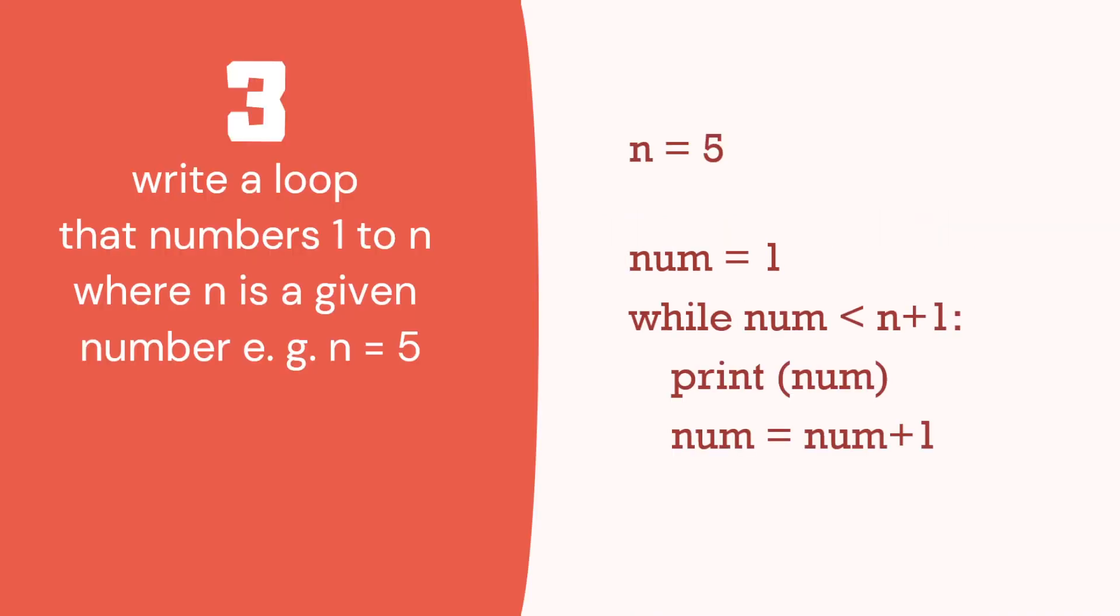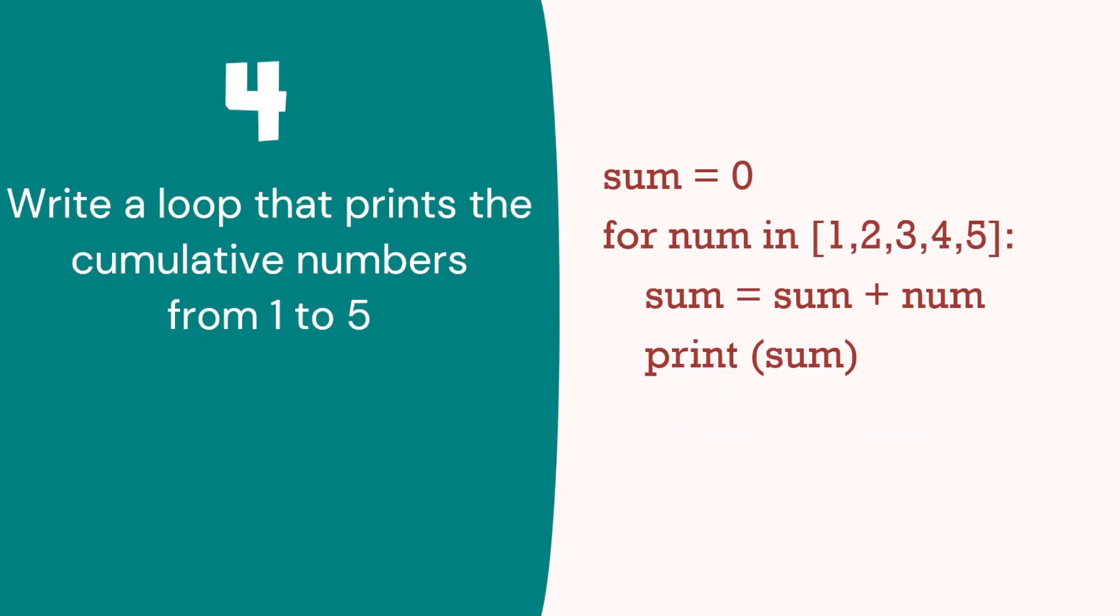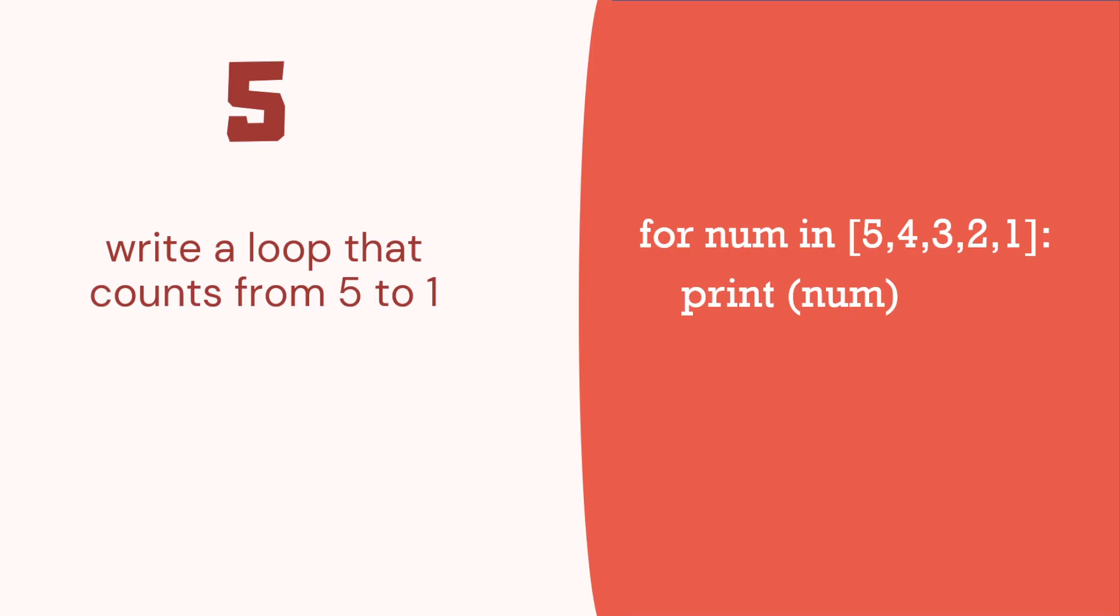Number 3: we've got a while loop. So n equals 5, and we've got a while number is less than n plus 1. So while it's less than 6, we're going to print a number. So that will print us our numbers 1 to 5. If we change n, this will still work. If we wanted to change n to 10, this will print numbers from 1 to 10. Number 4: we've got another for loop. We've got numbers 1 to 5. We can just add them up to print the sum. Because print sum is inside the for loop, is indented, that will print every time we go around the loop. So that's how we can print the sum, the cumulative sum of the numbers.